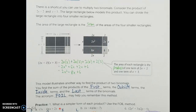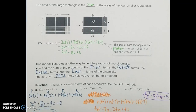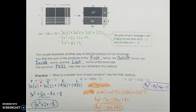Using the FOIL method with binomials 3x minus 4 and x plus 2, I wrote out each part. The first two terms are 3x and x, so I multiply those together. The outside terms are the very first and very last terms: 3x times 2. The inside terms — negative 4 and x — are the terms on the inside when the binomials are placed together. And the last two terms are negative 4 and 2. Multiplying all those together gives 3x squared, 6x, minus 4x, and minus 8.